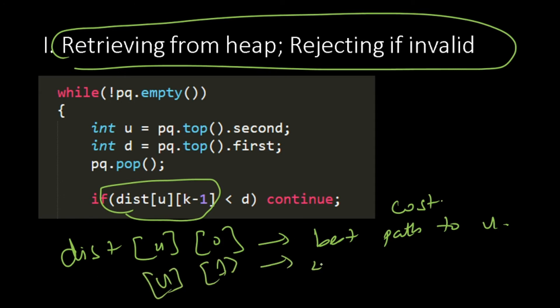Distance[u][1], the second best path cost. And what is distance[u][k-1], this means k-th best path cost.